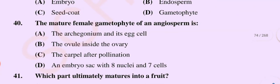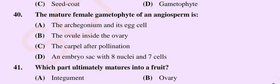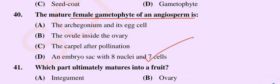Question number 40: The mature female gametophyte of an angiosperm is — option A archegonium and its egg cell, option B the ovule inside the ovary, option C the carpel after pollination, option D an embryo sac with eight nuclei and seven cells. The correct option is option D: an embryo sac with eight nuclei and seven cells.